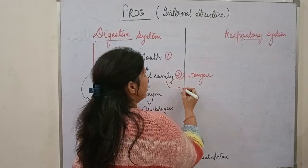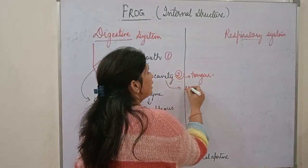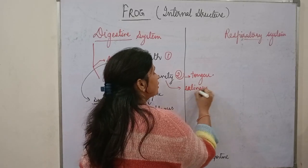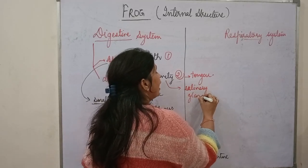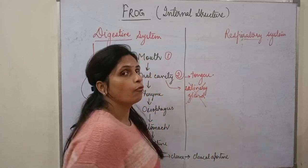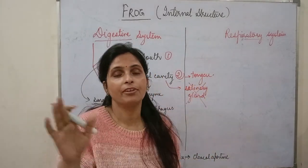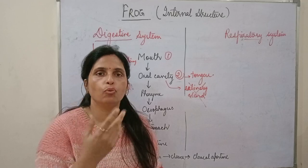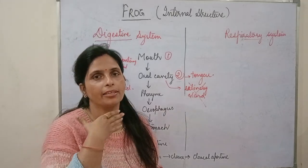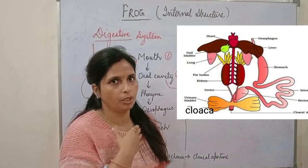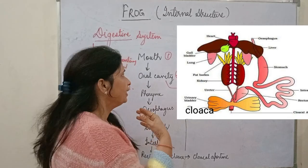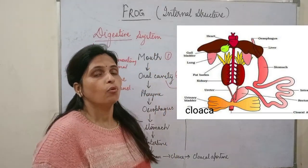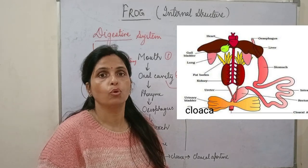One more important point is that in the oral cavity, the salivary gland — frog does not have a salivary gland. After the oral or buccal cavity comes the pharynx, and after the pharynx comes the esophagus. So, mouth, oral cavity, pharynx — all these route the food onward.